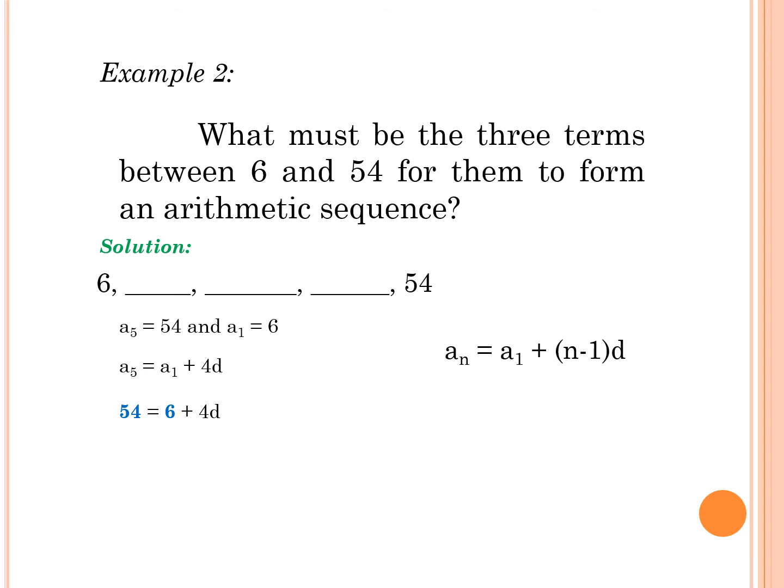Did you get it? Now, let's proceed further. So by transposition, we have 54 minus 6, 48 equals 4d. Simply divide by 4 to get an answer, which is equal to 12.